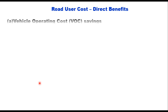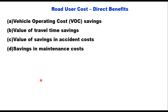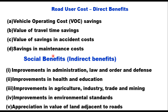Direct benefits include vehicle operating cost saving, value of travel time saving, value of saving in accident costs, and saving in maintenance costs. Indirect benefits are mainly social benefits like improvements in administration, law and order and defence, improvements in health and education, improvements in agriculture, industry, trade and mining, improvements in environmental standards, and appreciation in value of land adjacent to roads.